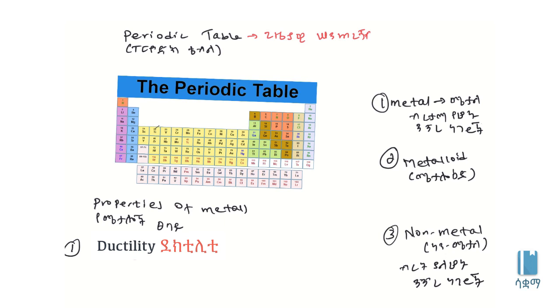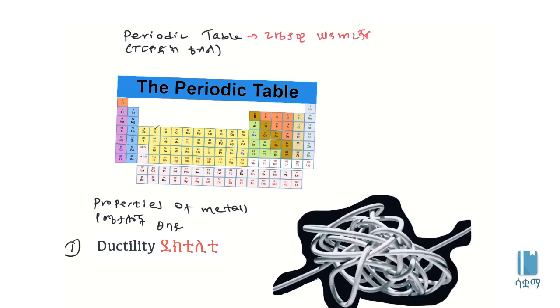Metal properties include ductility. Ductility means metals can be drawn into wires. This is an important characteristic that distinguishes metals. Non-metals lack this property, showing the clear difference between metal and non-metal behavior.